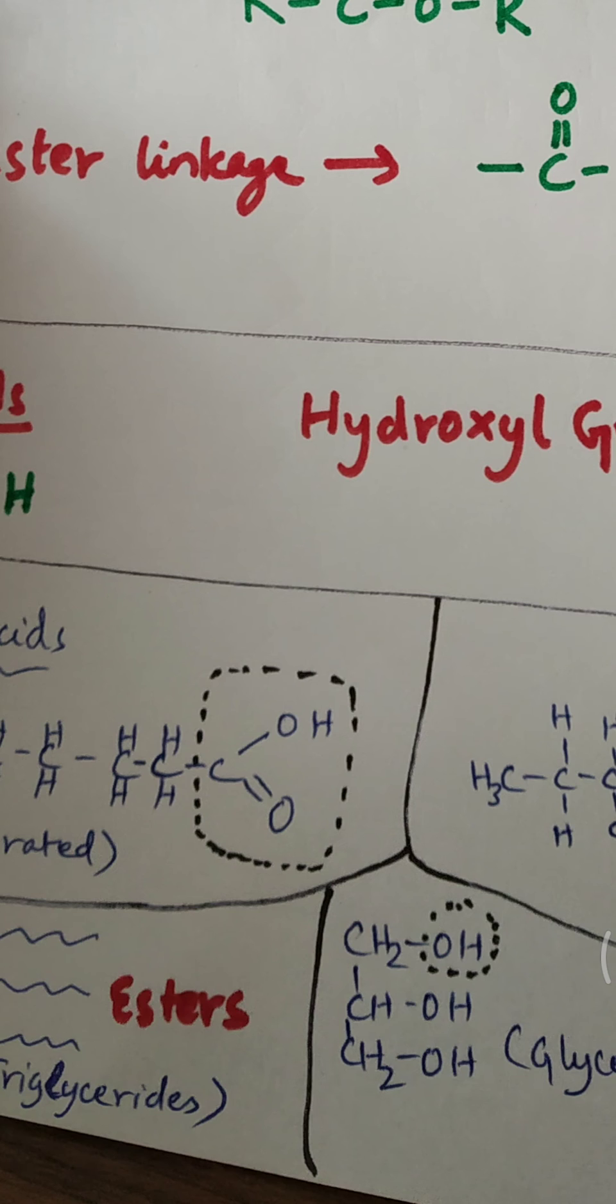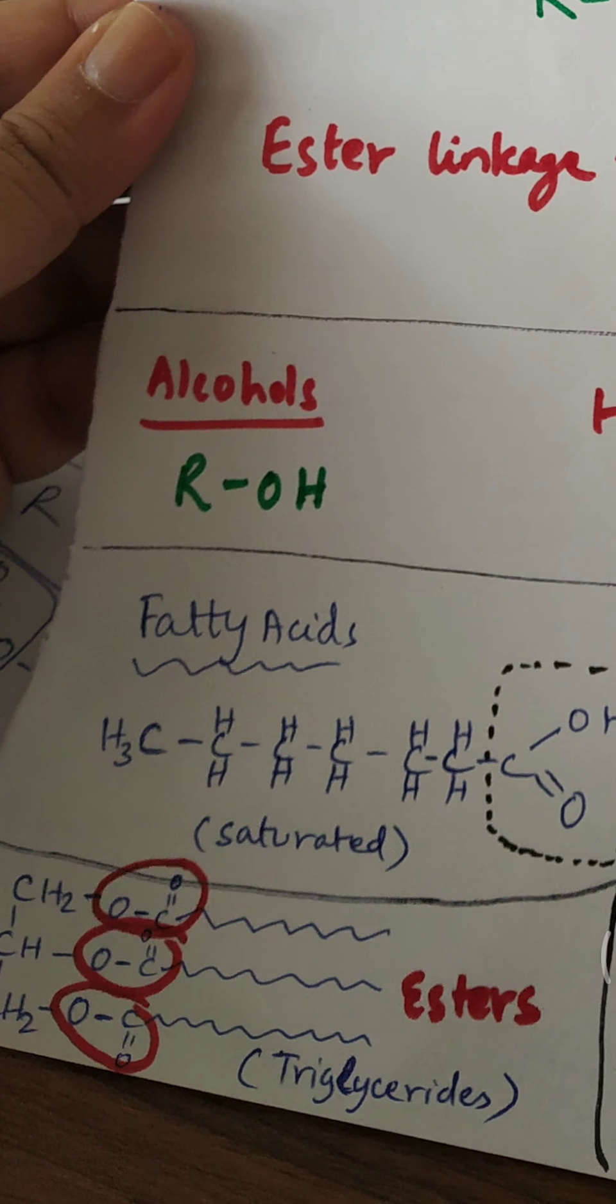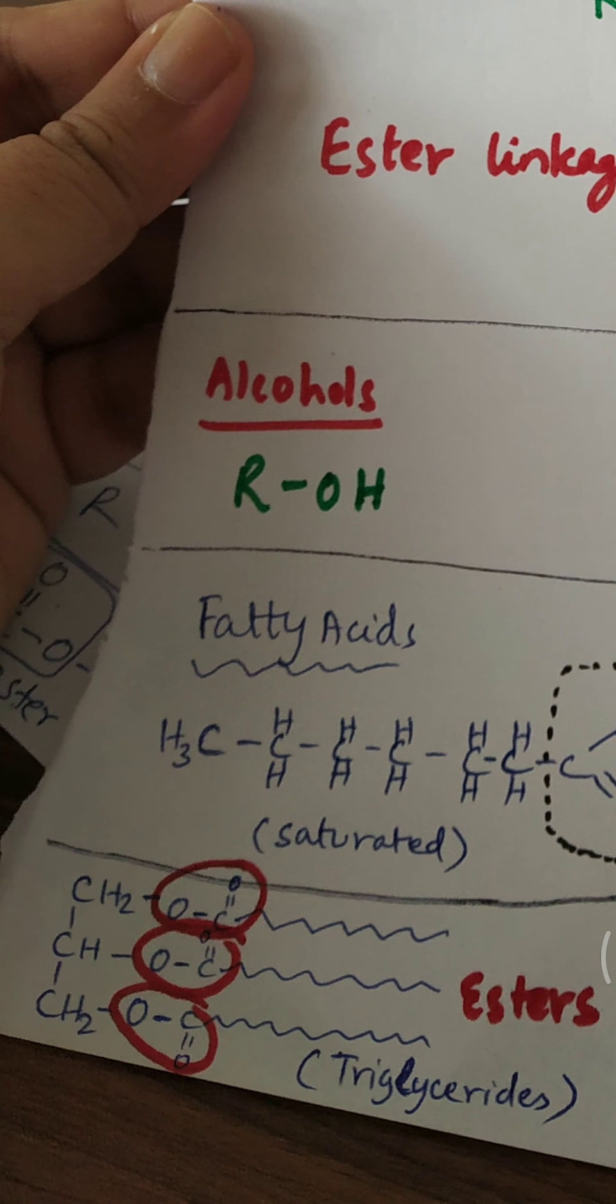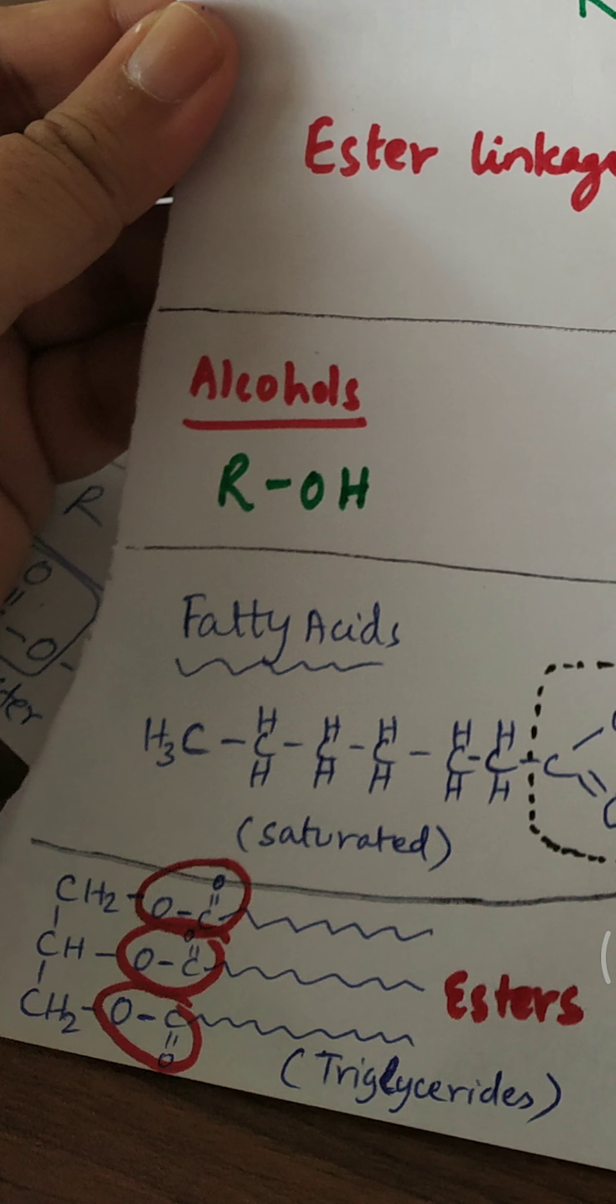Finally, when fatty acids and glycerol come together, they form triglycerides. I have just drawn the skeletal structure of triglycerides. I have not drawn all the carbons in the tail. You can see there are three esters. When the fatty acid combines with the glycerol, three ester bonds are formed: C double bond O and single bond O. Each C double bond O single bond O is an ester.